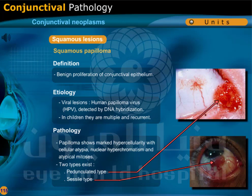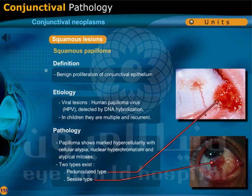Squamous papilloma is a viral lesion caused by human papilloma virus, detected by DNA hybridization. In children, they are multiple and recurrent. Papilloma shows marked hypercellularity with cellular atypia, nuclear hyperchromatism, and atypical mitosis. Two types exist: pedunculated type and sessile type.